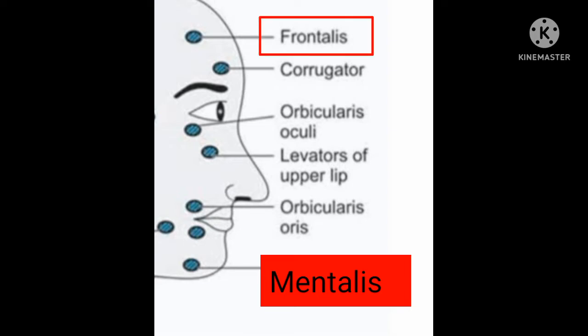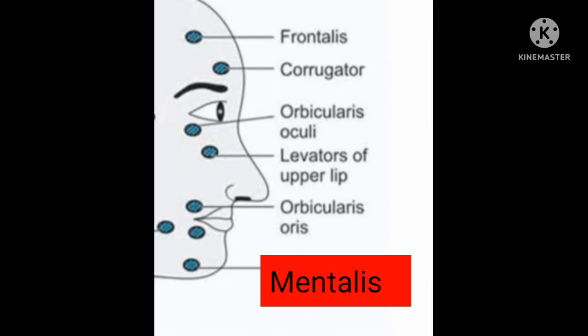This is the motor point for the frontalis muscle, and it is responsible for elevating the eyebrows. This is the motor point for the corrugator supercilii muscle, and it produces vertical wrinkles of the forehead.